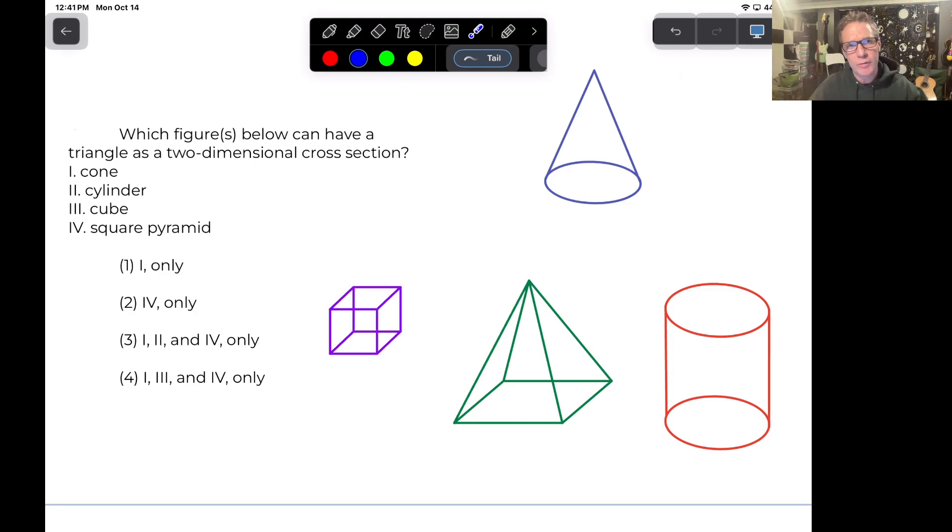Actually, that would still be an oval. So anyway, it's definitely not going to create a triangle. So that's out. Let's go ahead and cross that one off our list. Cylinder is not going to work.